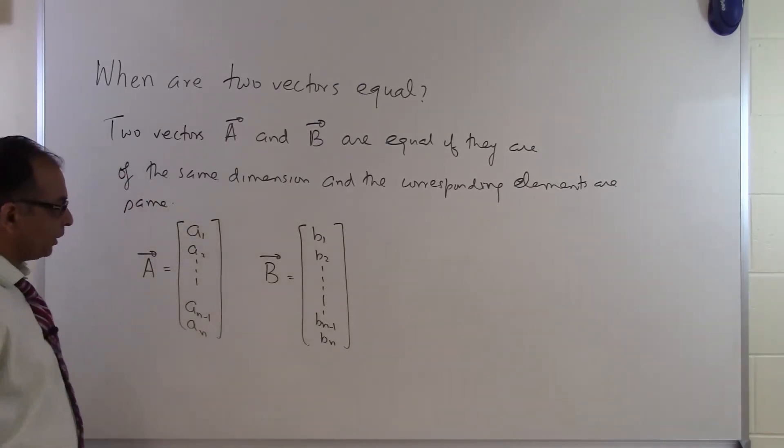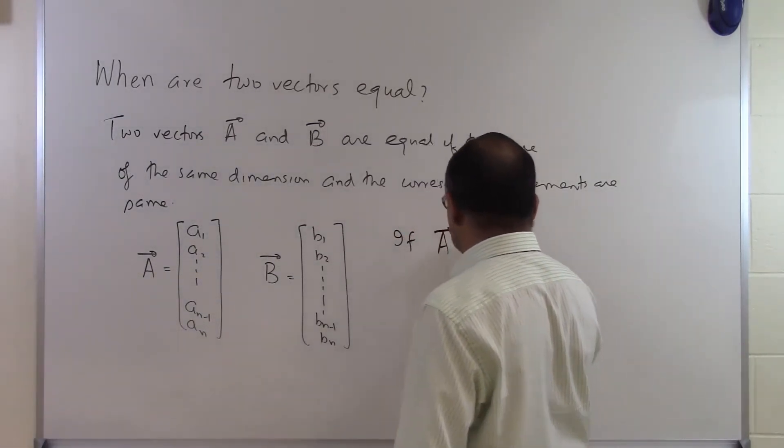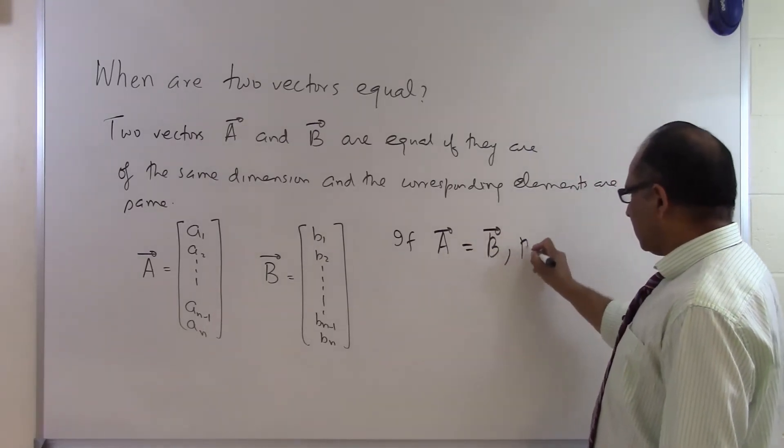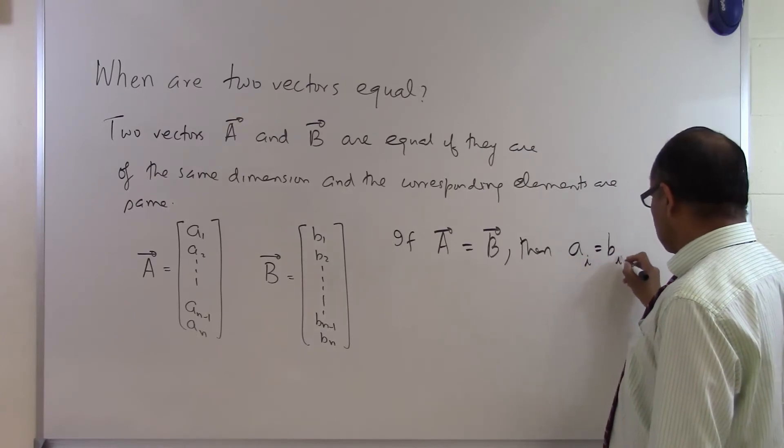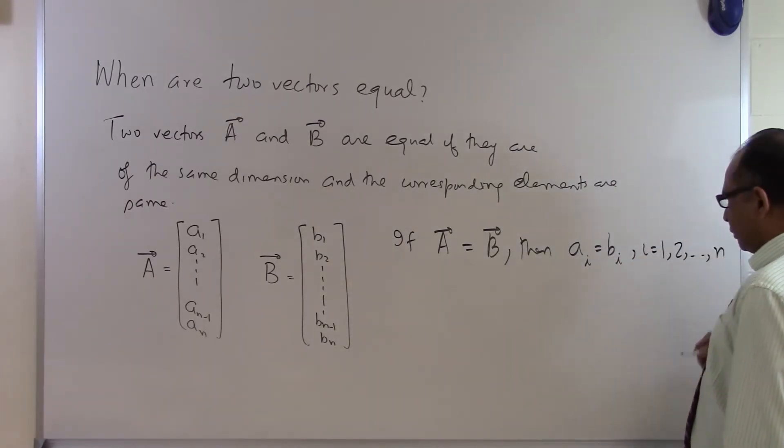But in order for A to be equal to B, if the A vector is the same as the B vector, then what do you need to have? You need to have Ai equal to Bi for all values of i going from 1, 2, all the way up to n.